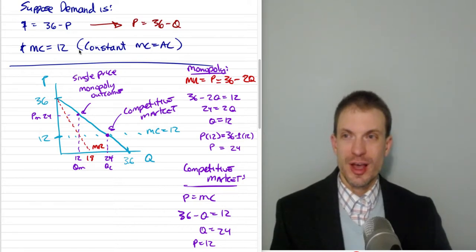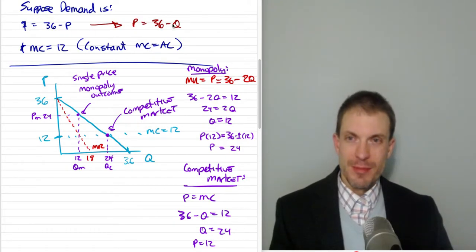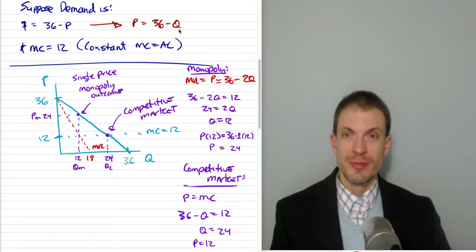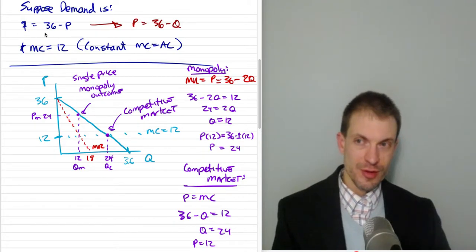To make this concrete, suppose we have a demand given by quantity equals 36 minus p. My inverse demand, what we usually graph, is going to be price equals 36 minus q. It's the exact same relationship, just price in terms of quantity instead of quantity in terms of price.